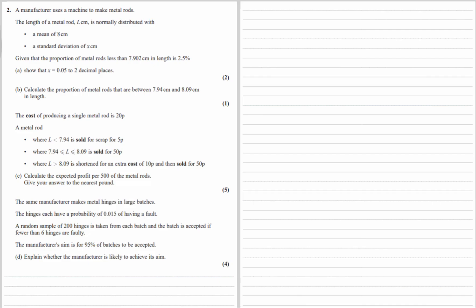Part D: The same manufacturer makes metal hinges in large batches. The hinges each have a probability of 0.015 of having a fault. A random sample of 200 hinges is taken from each batch and the batch is accepted if fewer than 6 are faulty. The manufacturer's aim is for 95% of batches to be accepted. Explain whether the manufacturer is likely to achieve its aim.